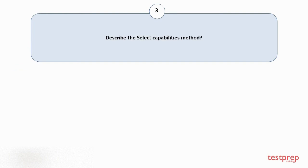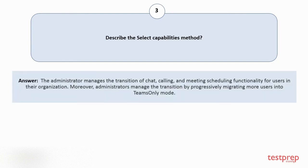Question number 3: Describe the select capabilities method. The administrator manages the transition of chat, calling, and meeting scheduling functionality for users in their organization. Moreover, administrators manage the transition by progressively migrating more users into teams-only mode.